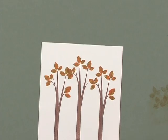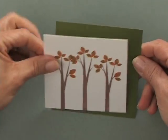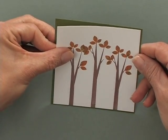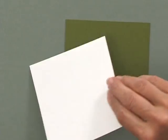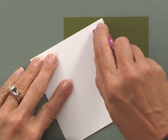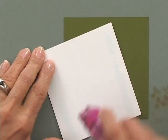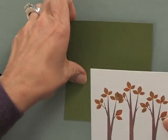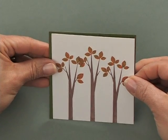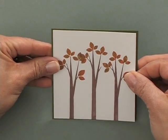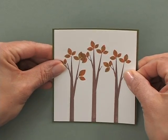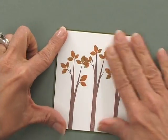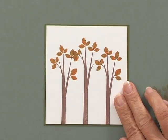Now this whole panel is going to be layered on top of some fresh asparagus cardstock, so I'm going to do that now. There we go. We have that panel ready to go.